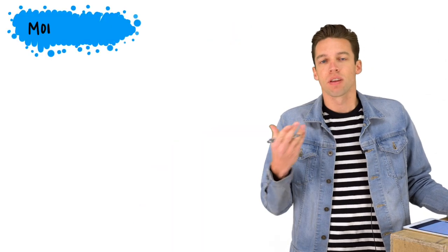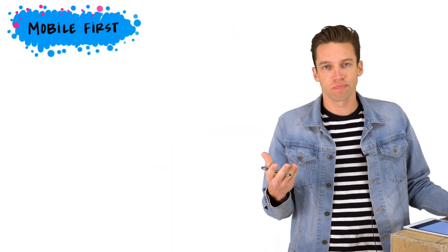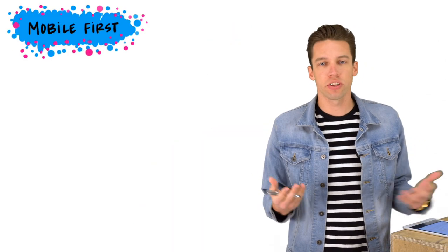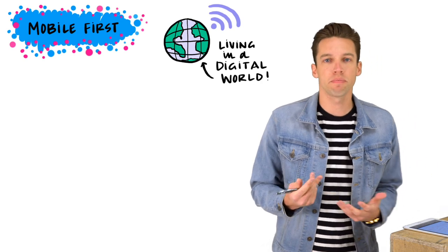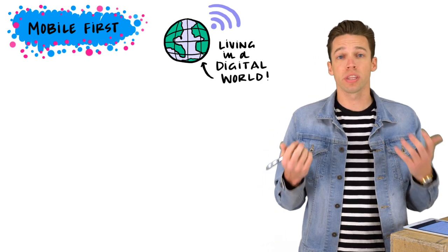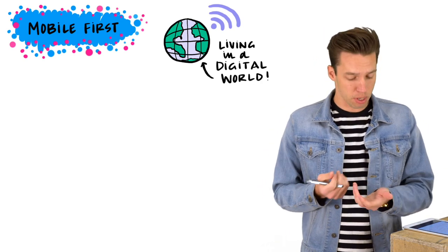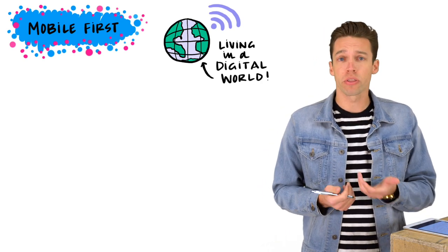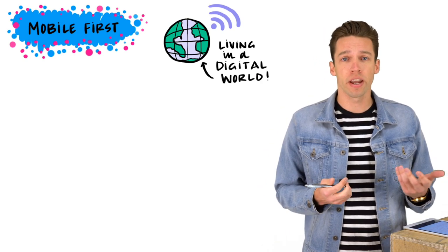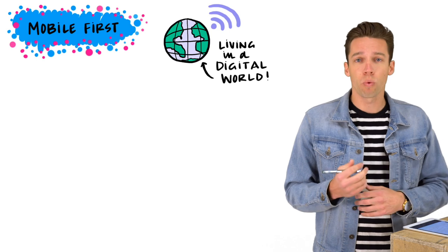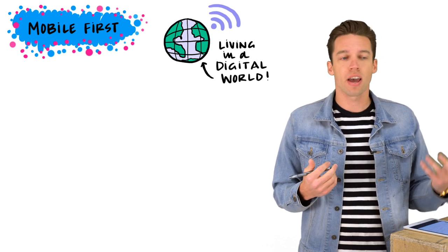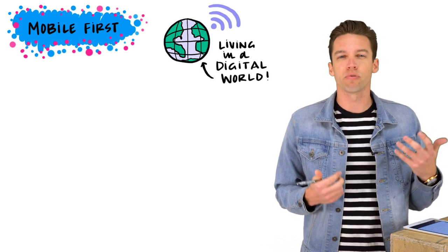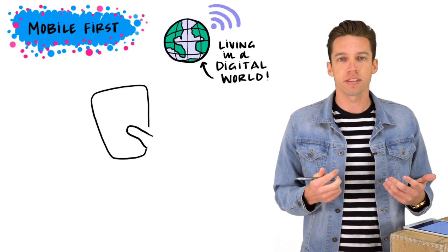Number four: mobile first. We're living in a digital world where the majority of people viewing the internet are going to be on their mobile phones — whether they're on the subway, on their way to work, walking down the street. There's not a lot of time to register for an event.